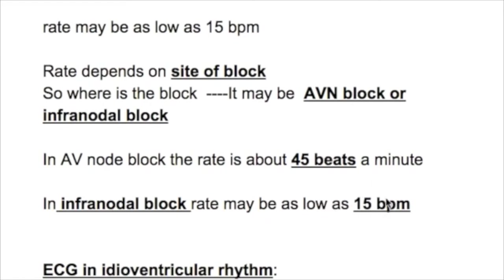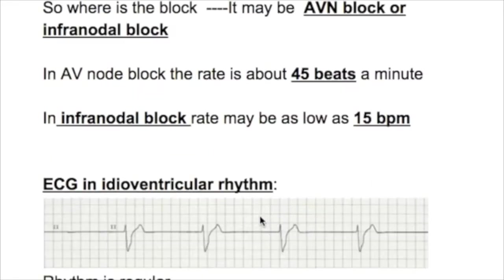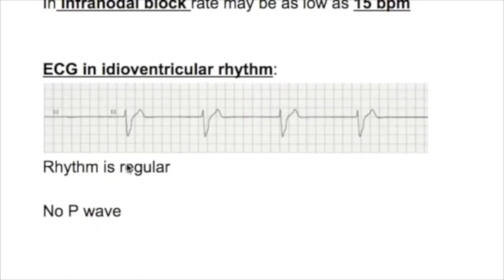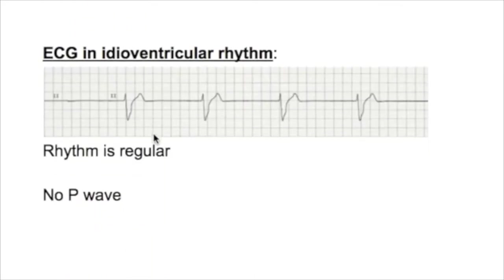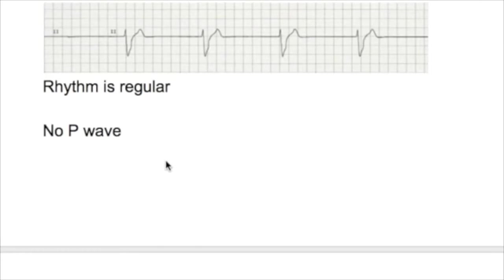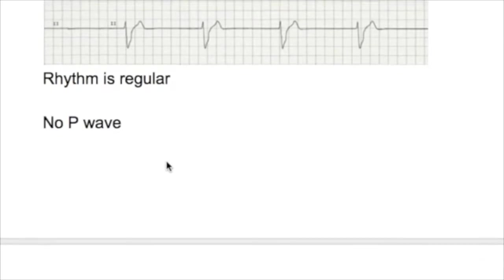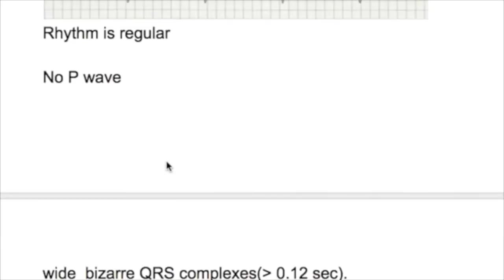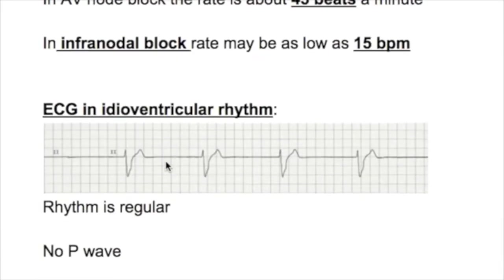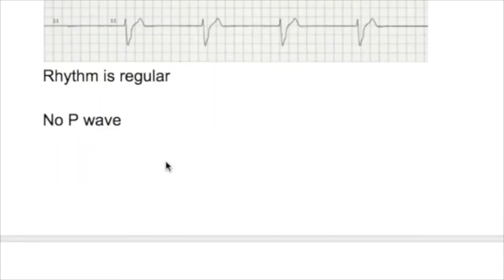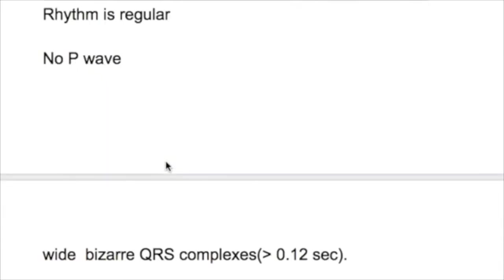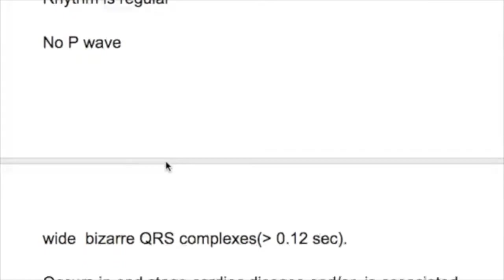So if the rate is slower, it's infranodal. On the ECG, the rhythm is regular with no P wave — absent, varied, or unrelated — and wide, bizarre QRS complexes of more than 0.12 seconds in duration.